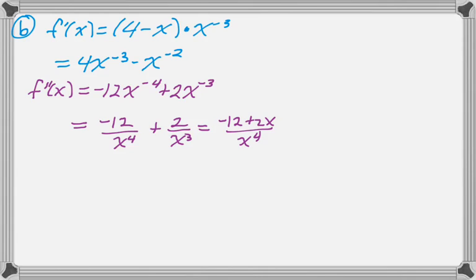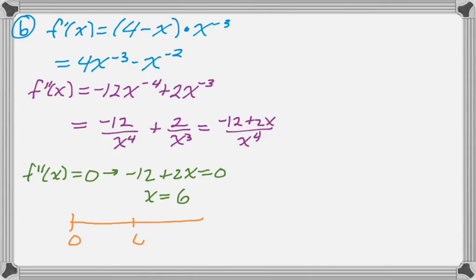And now what I need is to find where f double prime is 0 or undefined. The undefined, again, is out because of the domain. So where it's 0 means that that numerator is 0. And I'm sure you can tell that that's 6. I do need to test it. So if I plug in 1, I definitely get negative. And if I plug in a million, I get positive.